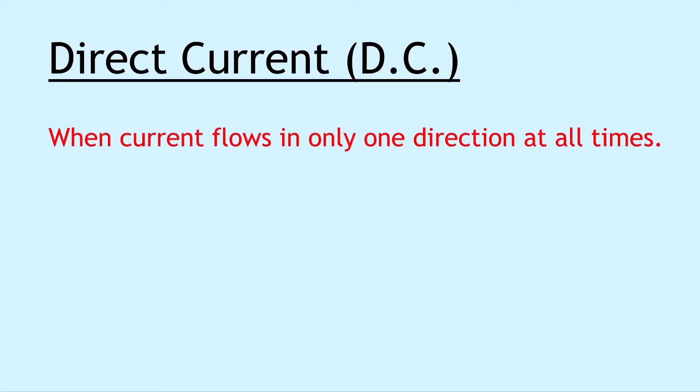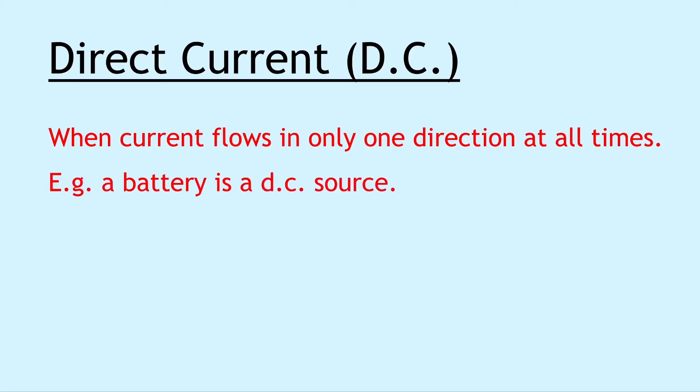We start with direct current, also known as DC, and this is when current flows in only one direction at all times. For example, a battery is a DC source.